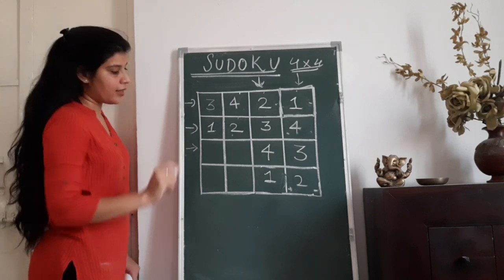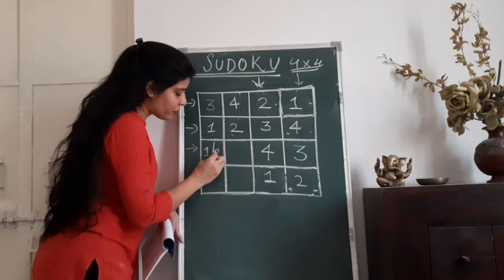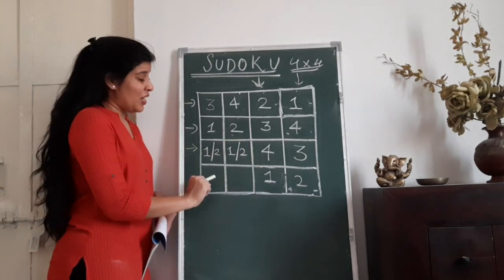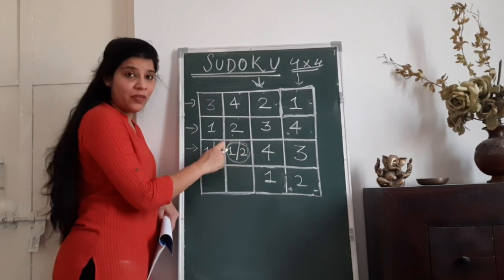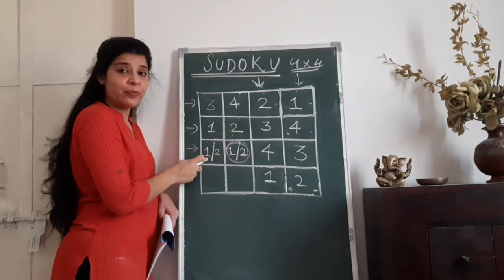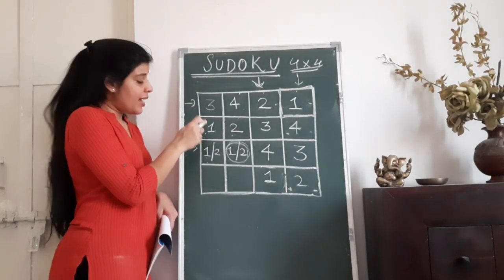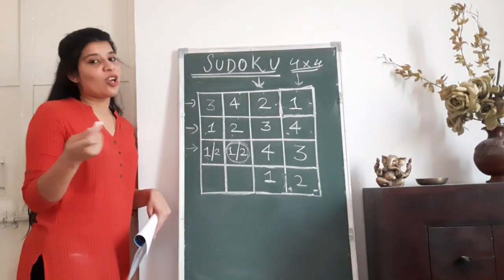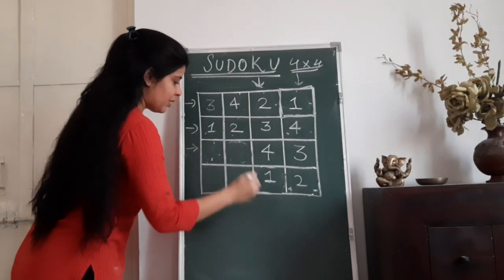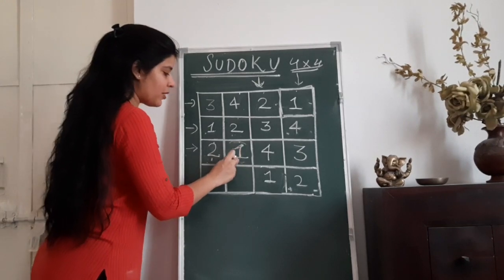Now we only have four more blocks to fill. If I look at the third row, I can see the numbers 3 and 4 are already used, so I have to use the numbers 1 and 2. It is pretty obvious where 2 will come and where 1 will come. You can clearly see that 2 cannot come in this block because just above it, 2 is already there, and you can't repeat 2 in this column. In a similar manner, 1 is just above the other block, so if I put 1 there, the number is going to repeat itself. Therefore, this cell will be 1 and the other will be 2.